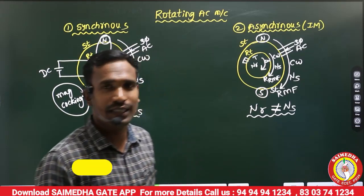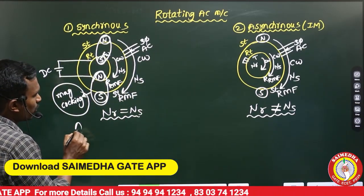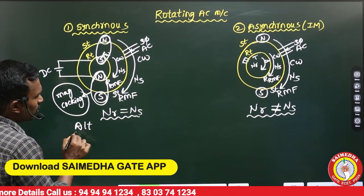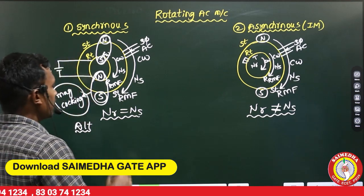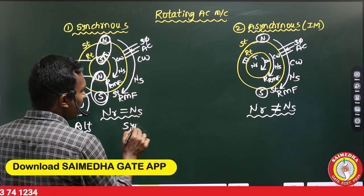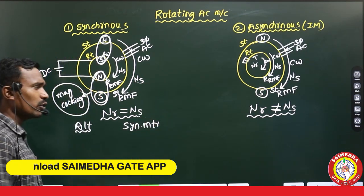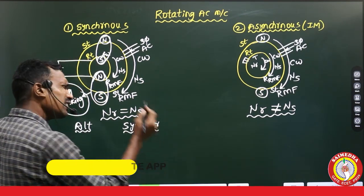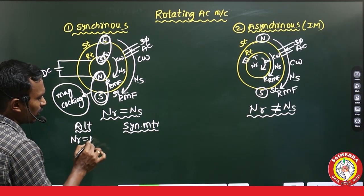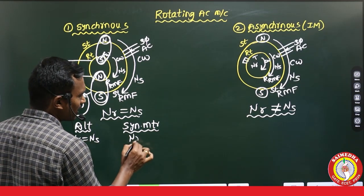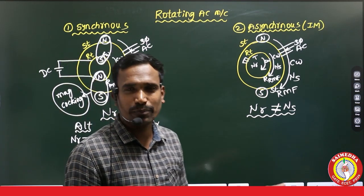Generally, we have a synchronous generator, alias alternator, and synchronous motor — two types of synchronous machines. Whatever it may be, whether synchronous generator or synchronous motor, in both cases the rotor speed is exactly equal to synchronous speed.